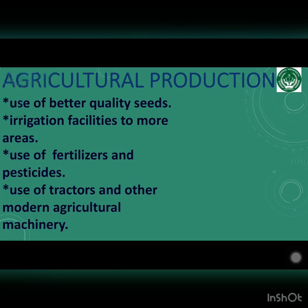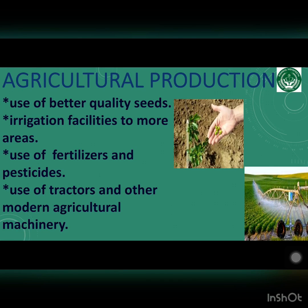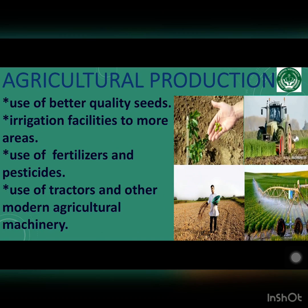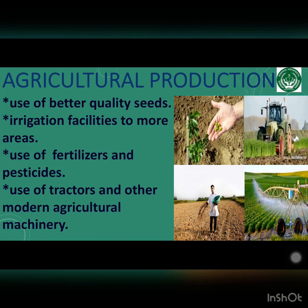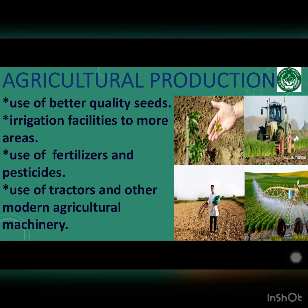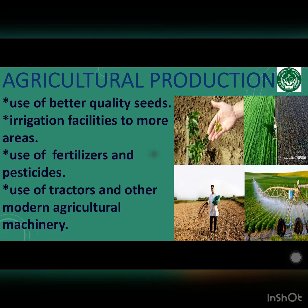Our total agricultural production has increased since independence due to use of better quality seeds, more area has been brought under irrigation, use of fertilizers and pesticides, and use of tractors and other modern agricultural machinery.